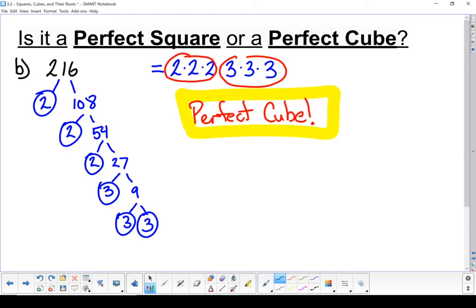If I look at those factors, I've got factors of two and factors of three. Two times three is six. So six to the power of three must equal 216. Six cubed is 216.